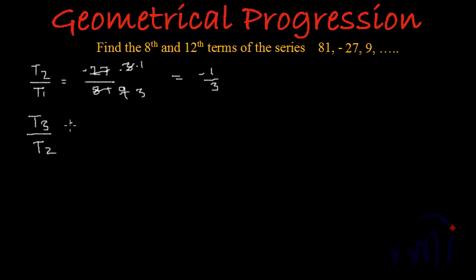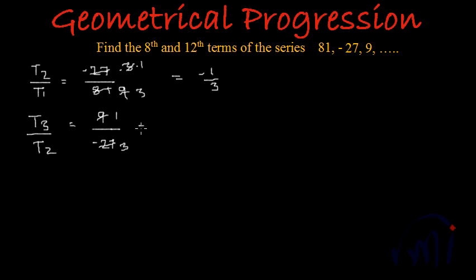If I do T3 divided by T2, this will be equal to 9 divided by minus 27. 9 ones are 9, and 9 threes are 27. If any one of the terms is negative in multiplication or division, the whole result will be negative. So this will also be minus 1 by 3. So we are getting a common ratio which is minus 1 by 3.